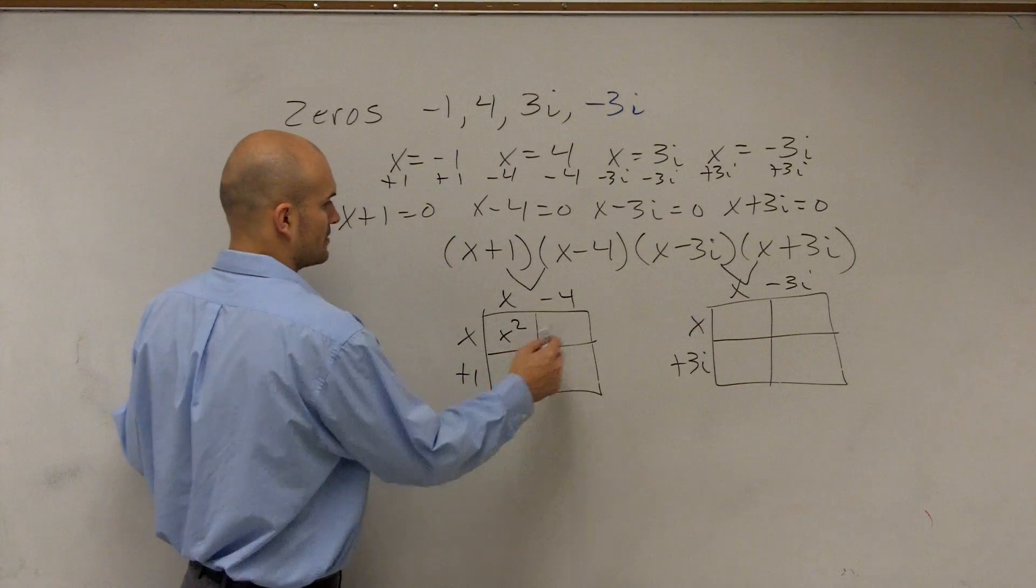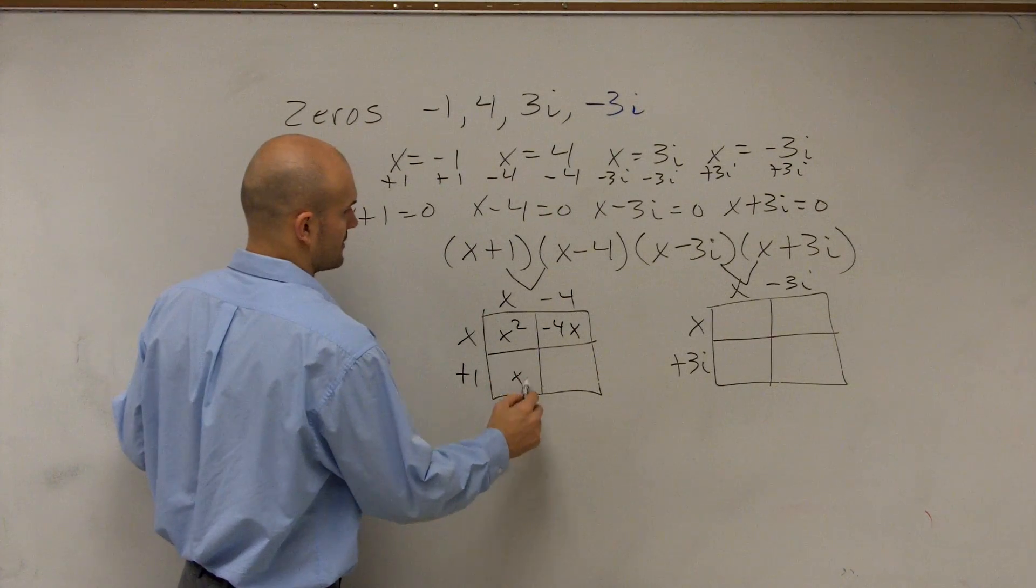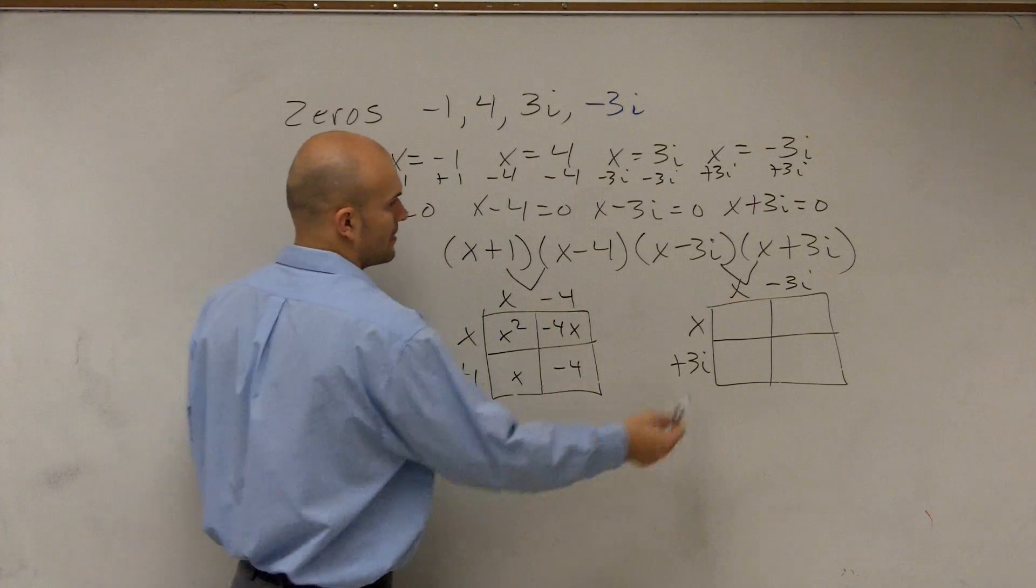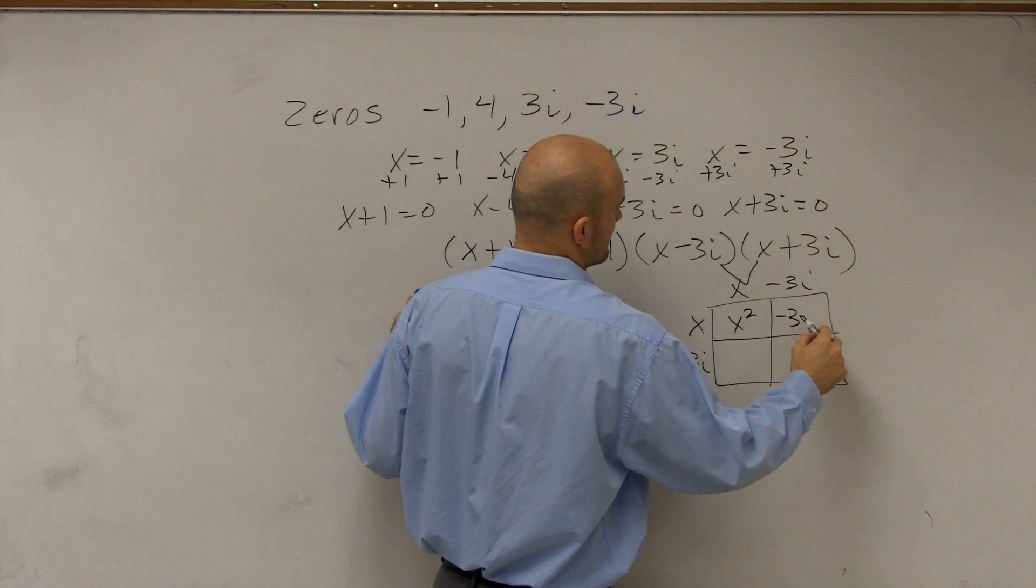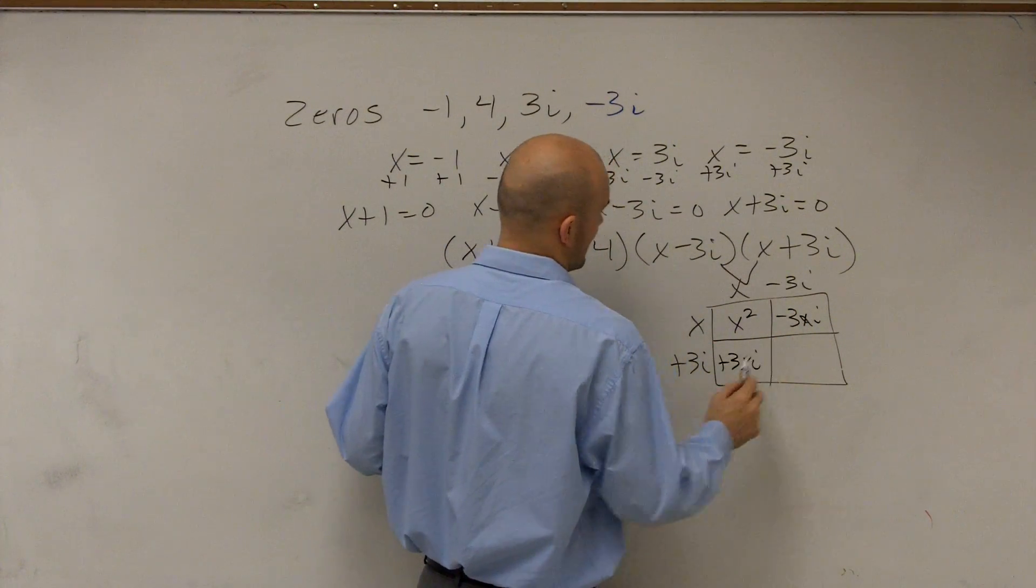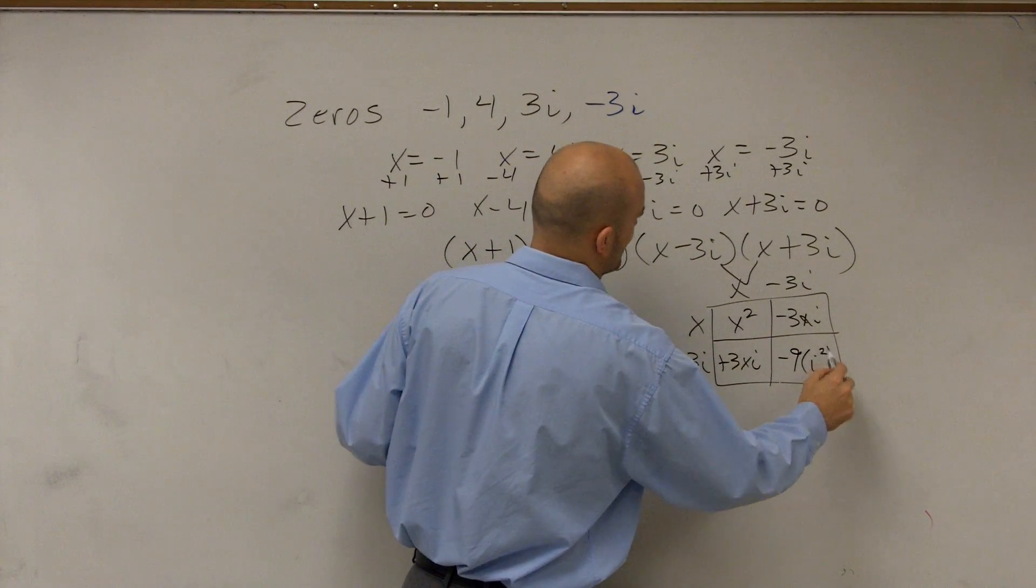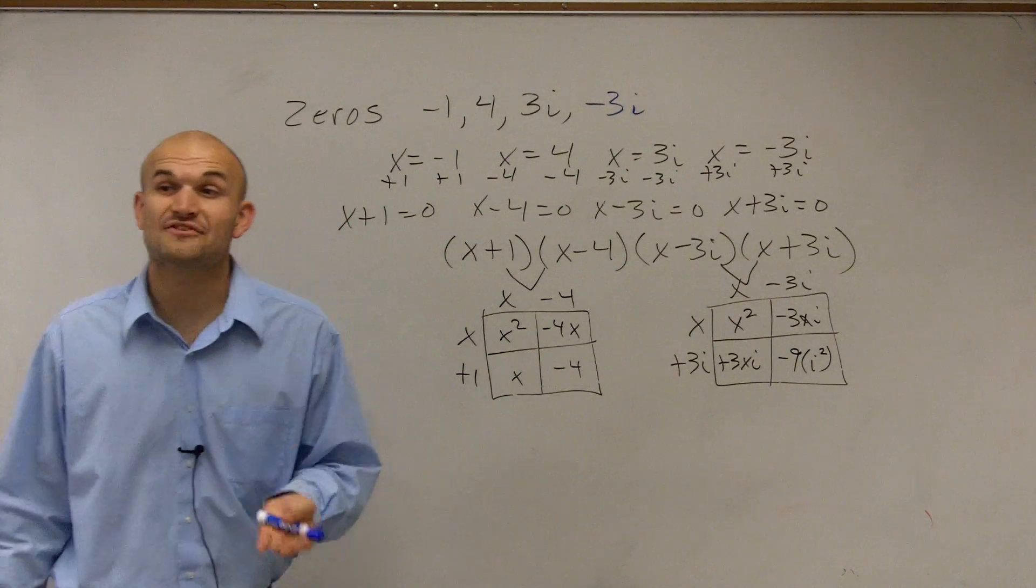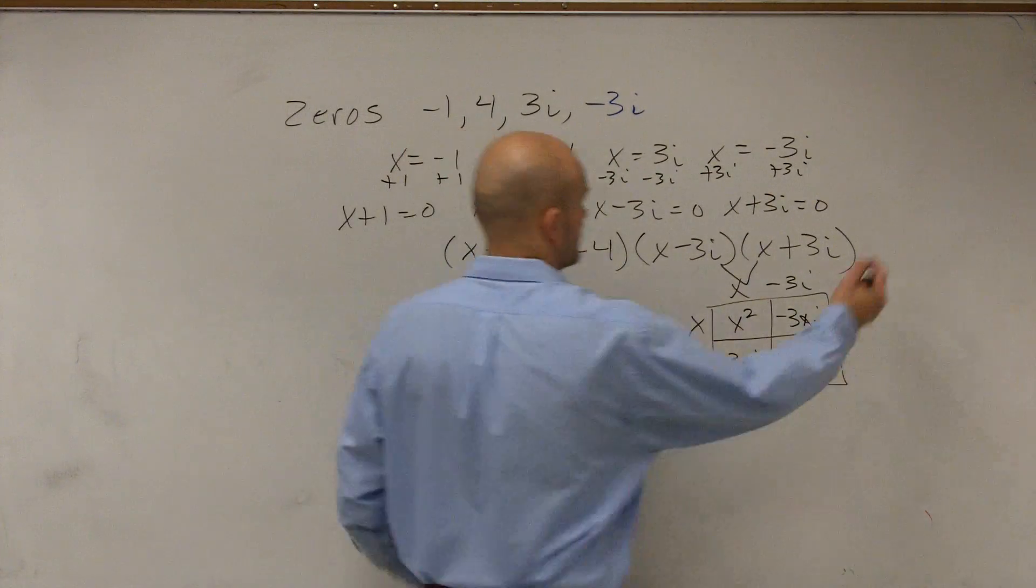Therefore I get x squared minus 4x plus x minus 4. Here I get x squared minus 3xi plus 3xi and then here I get negative 9i squared. Please remember i squared is equal to negative 1, right?